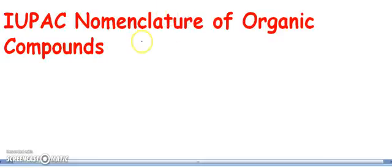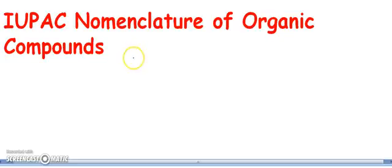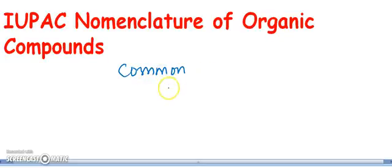Welcome to chemistry class. Let us start today learning the topic IUPAC nomenclature of organic compounds. With the development of organic chemistry, a large number of organic compounds have been prepared. Now, in order to systemize the study of organic compounds, attempts have been made to frame certain rules to classify them and give their names. The compounds today have common names, generally named after the source from which the compound was obtained.